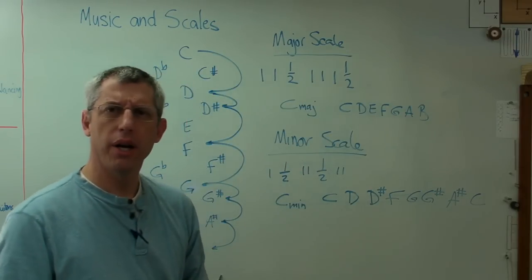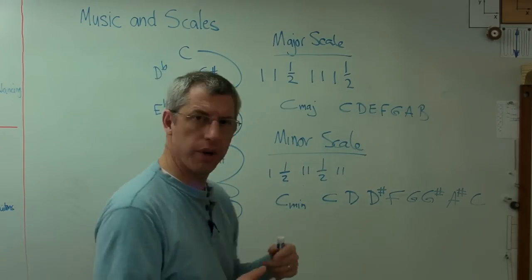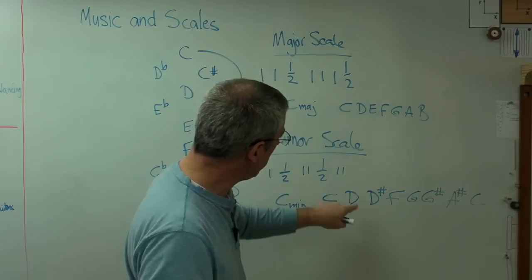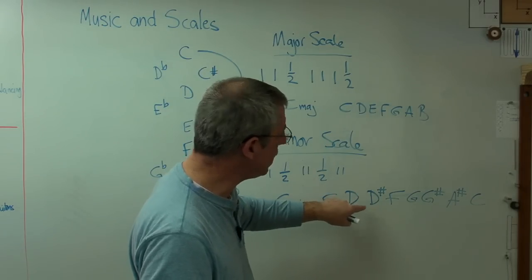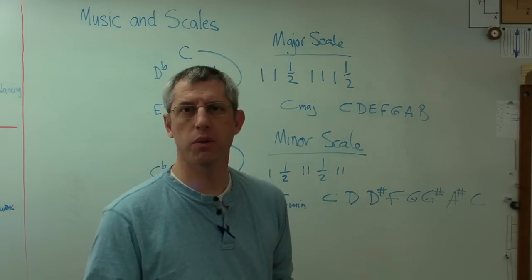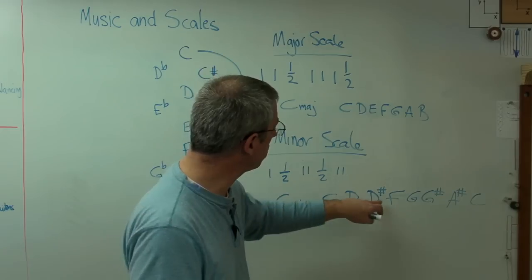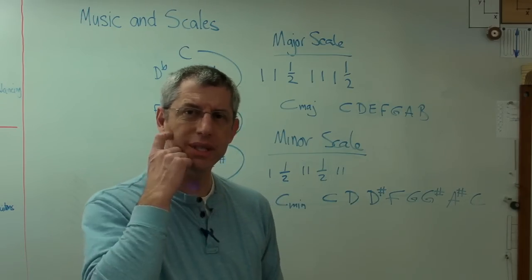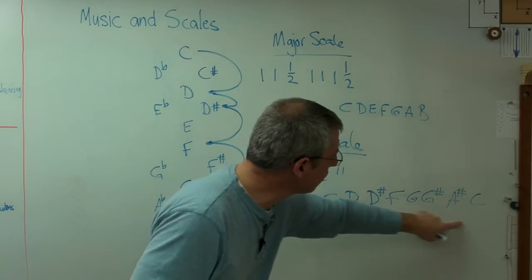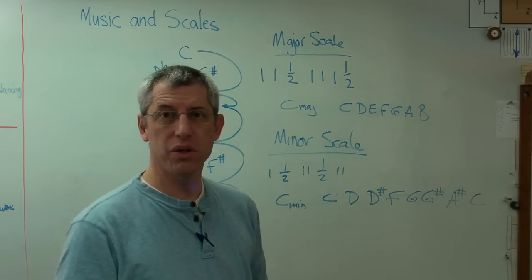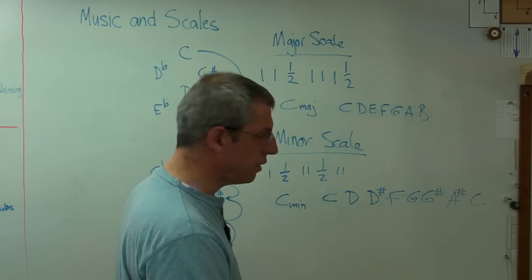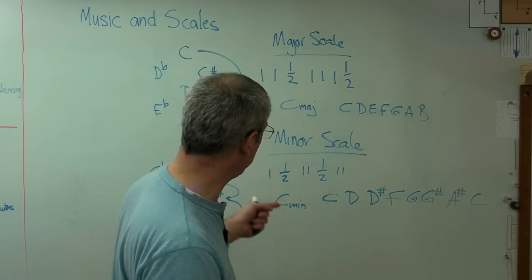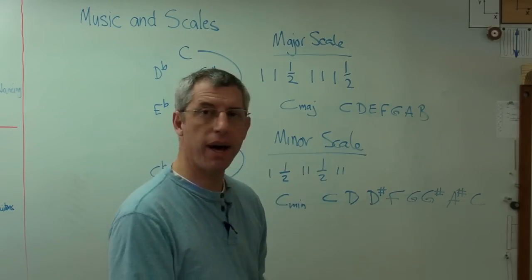There's one problem here. The way the key signature is written out on the staff, you can't have a D and a D-sharp both. It doesn't work because you're going to put a sharp note on that staff. Well, you're not going to be able to distinguish between those two. Well, that's a problem. You can't actually write that key out in musical notation. So what do you do? Well, you don't change the scale. That's certainly a valid scale. What you do is you write it in terms of flats.